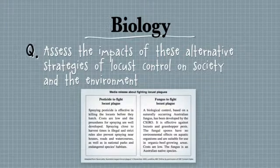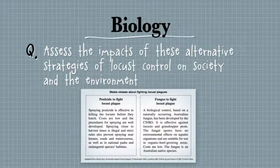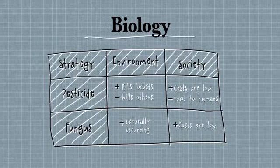I've chosen a difficult question from the 2005 paper to show how a table really helps you answer all parts. If one side is talking about pesticide and the other about fungus, you might think your teacher never taught you that — but it's a skills question. You'll often get data you haven't seen before; it doesn't mean you haven't studied, it means they want you to apply your knowledge. First, look at the verb: 'assess' means to make a judgment.